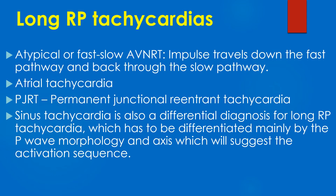Long RP tachycardia includes atypical fast-slow AVNRT, in which the impulse travels down through the fast pathway and back through the slow pathway. Since the return circuit is the slow pathway, the RP interval is longer than the PR interval.